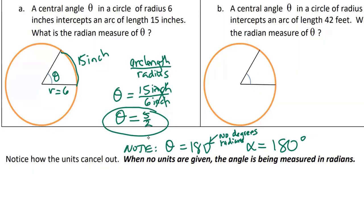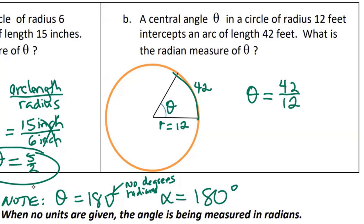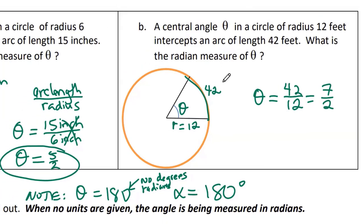Now do part B at your desk. The central angle theta in a circle of radius 12 feet intercepts an arc of length 42 feet. What is the radian measure of theta? 42 over 12 reduces to 7 halves. It's okay to give it as a fraction or a decimal as long as you don't round off.